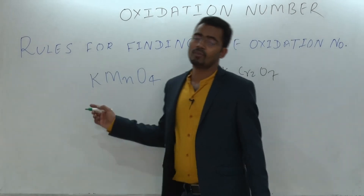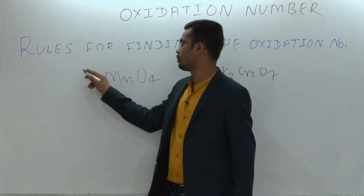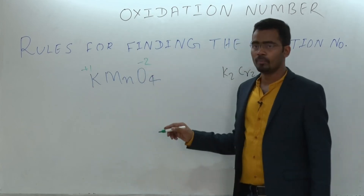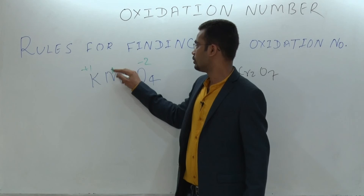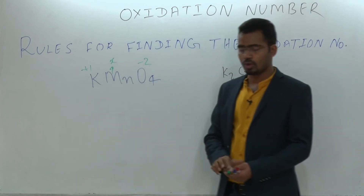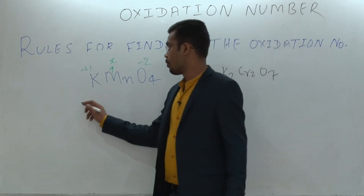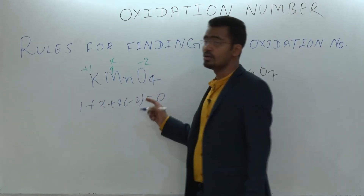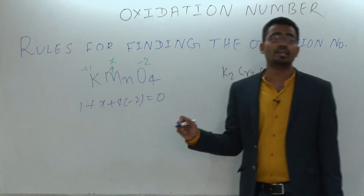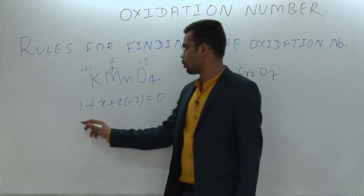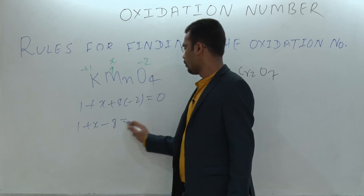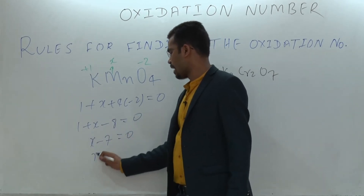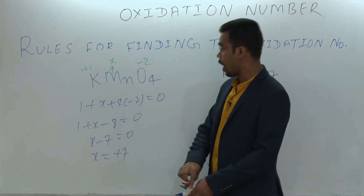For KMnO₄, potassium belongs to group 1, so it has +1. Oxygen always has −2 and manganese is x. So: 1 plus x plus 4×(−2) must equal 0, since the compound is neutral. That gives 1 plus x minus 8 equals 0, so x minus 7 equals 0, meaning x equals plus 7.